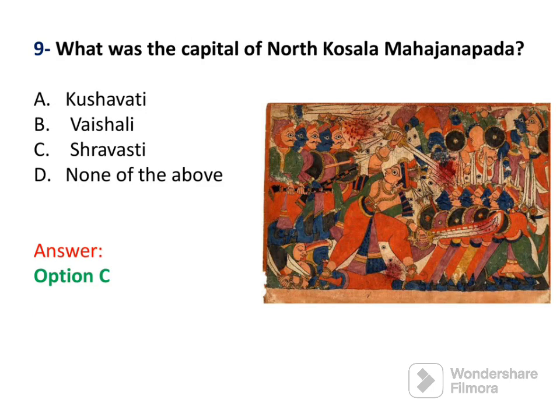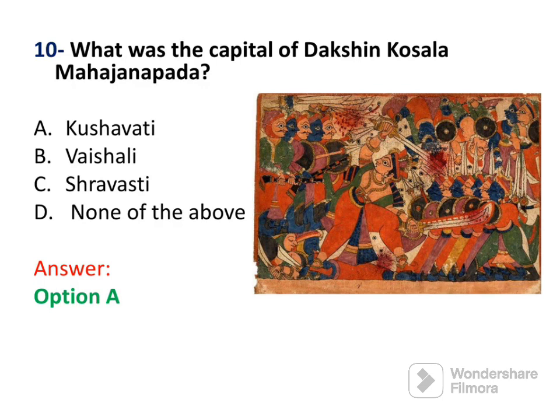The next question asks: what was the capital of North Kaushal Mahajanpad? Kaushal was divided into two parts — North Kaushal and South Kaushal (also called Dakshin Kaushal) by the Saru River. The capital of North Kaushal was Shravasti. Here you can see a painting from Kaushal Mahajanpad. For Dakshin Kaushal, the capital was Kushavati.